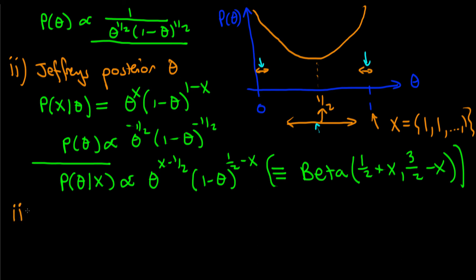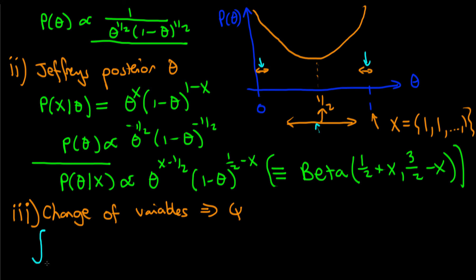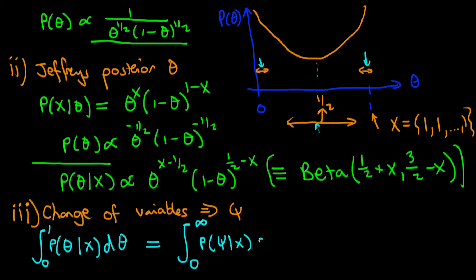Now I want to apply the change of variables rule — using the Jacobian to derive what the posterior is in terms of the parameter psi. The key is that whatever parameterization we use, the integral of the probability distribution must always equal one. So the integral of p(theta | x) over theta from zero to one must equal the integral of p(psi | x) over psi from zero to infinity. Psi here is defined as the odds: theta over one minus theta, bounded between zero and infinity.